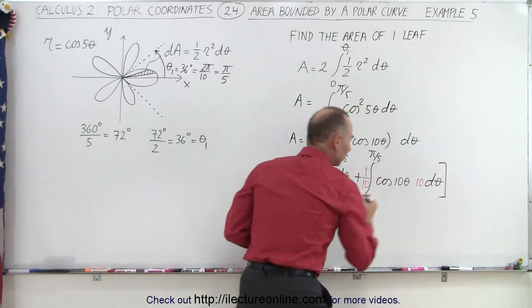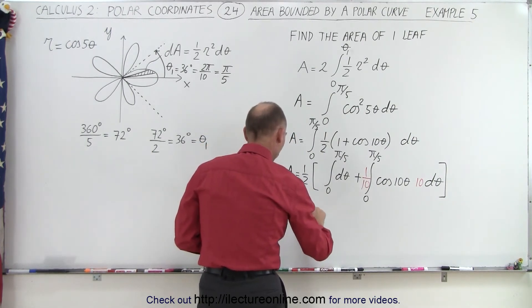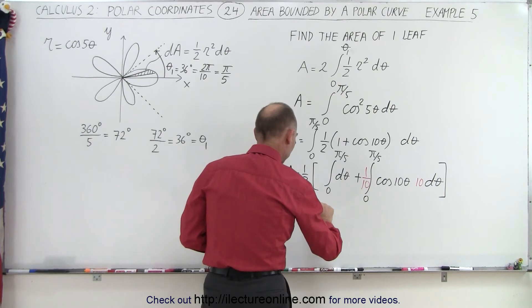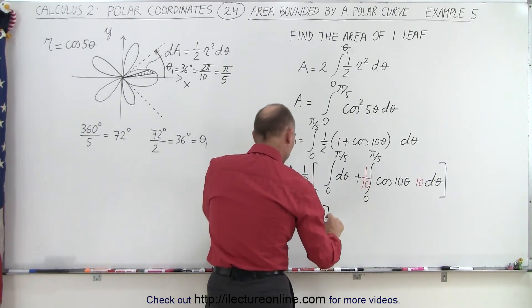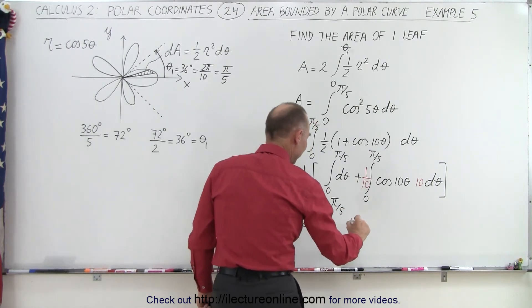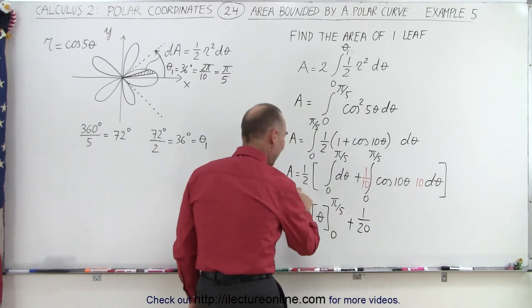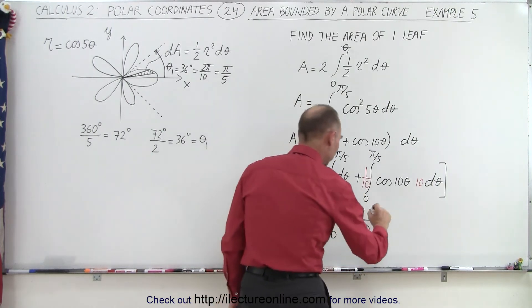So, let's close the bracket. Now we're ready to integrate this. So, the area would be equal to one-half times theta, because that's the integral of d theta, from zero to pi over five, plus one-half or one-twentieth, because one-half times one-tenth is one-twentieth, times...